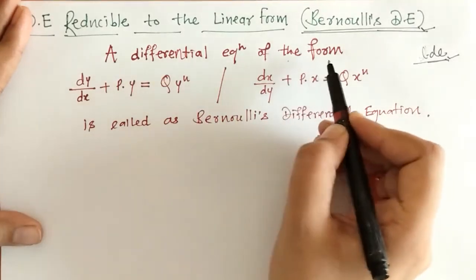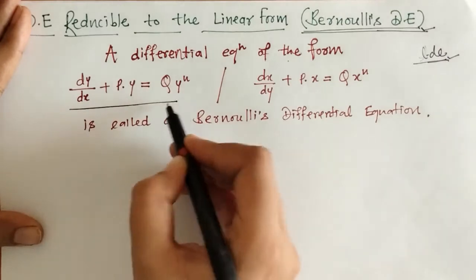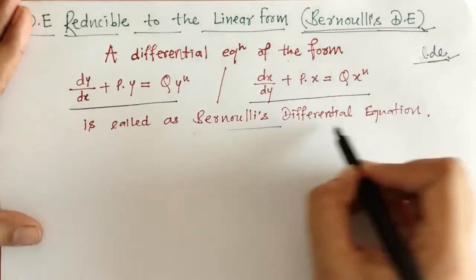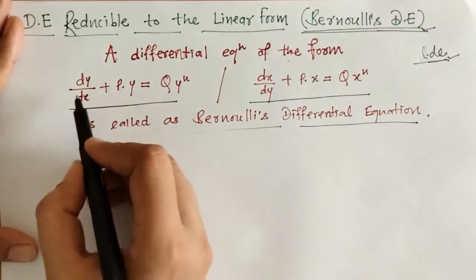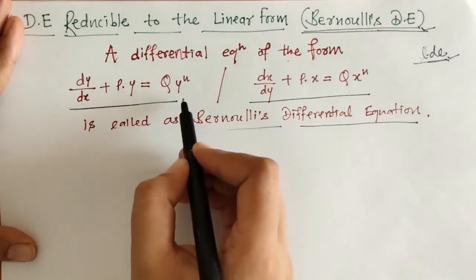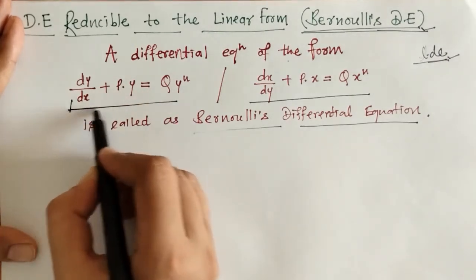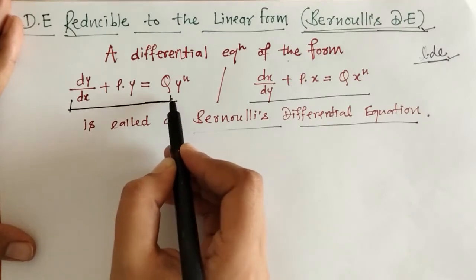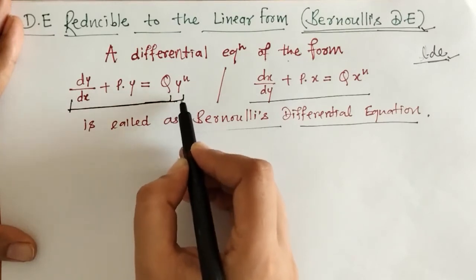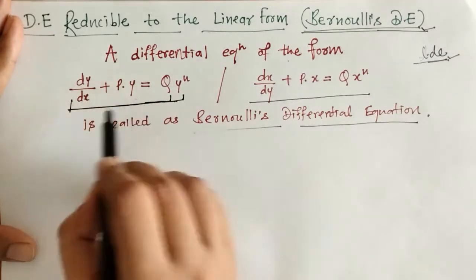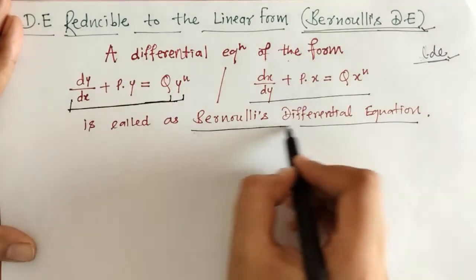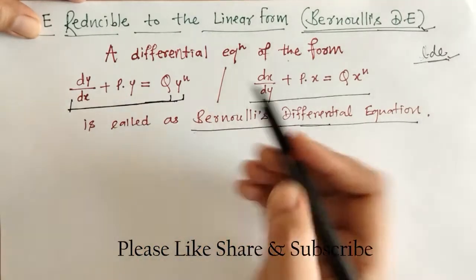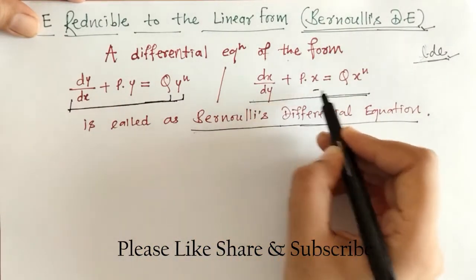A differential equation of the form dy/dx plus Py equals Q·y raised to n is called Bernoulli's differential equation. We can check that up to Q this is the standard form of a linear differential equation, and here we have this extra term y raised to n. In this form we have y as a dependent variable, and in the other form we have x as a dependent variable.